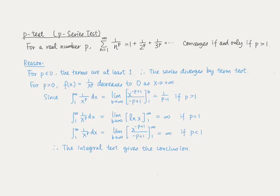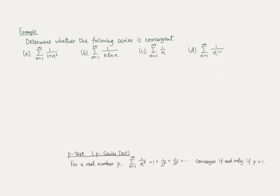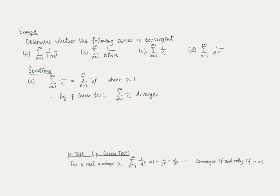Please make a pause and try to use the p-series test to attempt parts C and D. For part C, this series has the form with p equals 1. Since p is not greater than 1, by the p-series test this series diverges. For part D, this is again a series of this form where p equals 1.1, which is greater than 1. Therefore, by the p-series test, this series is convergent.